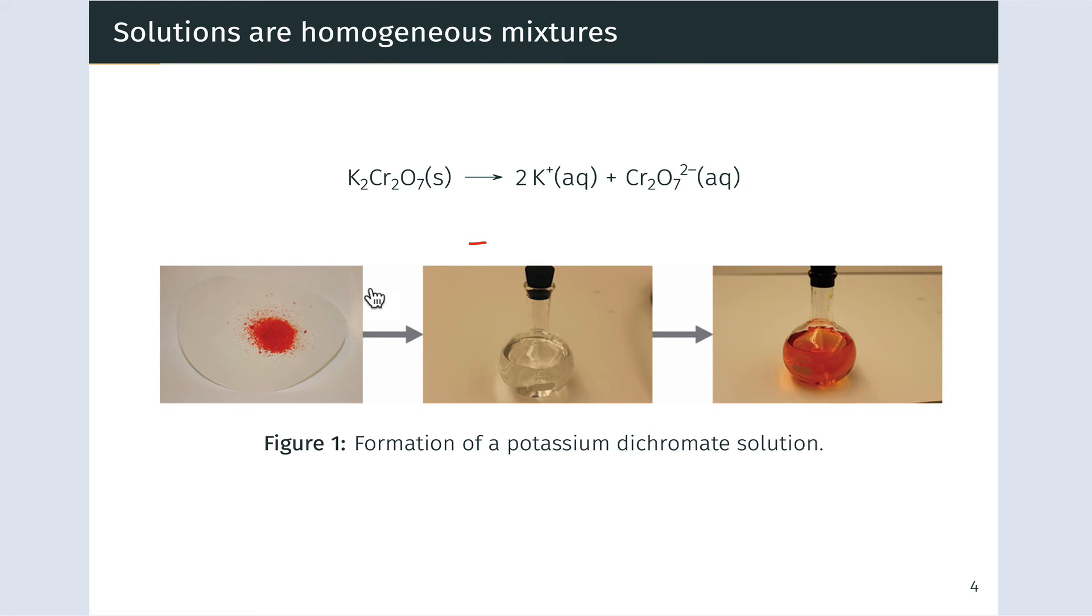Potassium dichromate is an orange solid. We see it here. And when it's placed in water, a solution is produced through two distinct, conceptually anyway, processes. Dissolution is the conversion of the solid into an aqueous phase, its incorporation into the liquid phase.